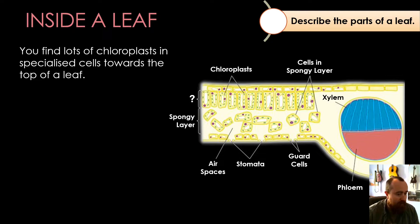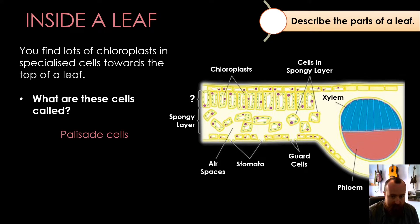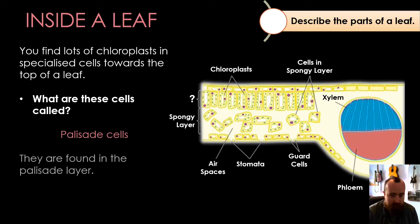You find a lot of cells containing lots of chloroplasts towards the top of the leaf. Those cells are called palisade cells — pronounced like 'palace aid' — palisade cells. And they're found in what's known as the palisade layer. That's the last part we've now labeled up on the entire cross-section of a leaf, and we know what each of the parts is for.